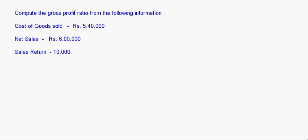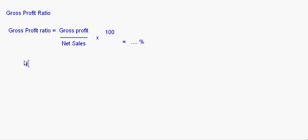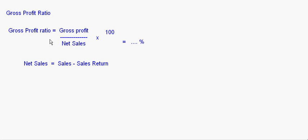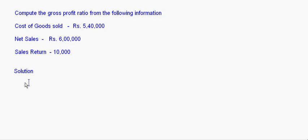Before solving this, note that net sales equals sales minus sales return. Now in this question, net sales and sales return are given along with cost of goods sold. The gross profit ratio equals gross profit upon net sales into 100, so we need to find the figure of gross profit, which is not directly given in this question.